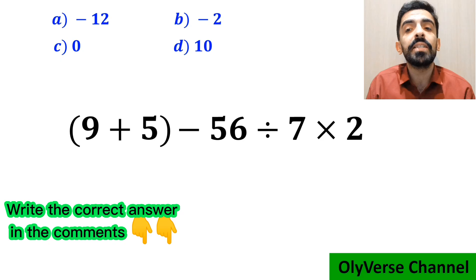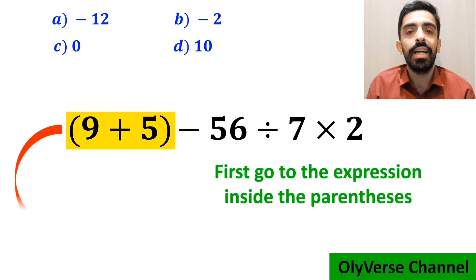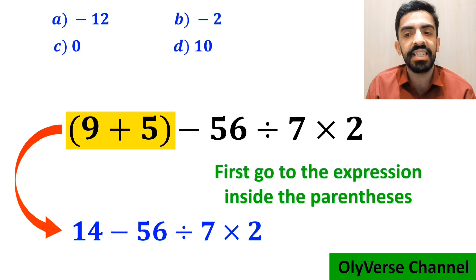Also, some other people, when solving this question, first go to the expression inside parentheses, and write this expression as 14 minus 56, divided by 7, multiplied by 2.